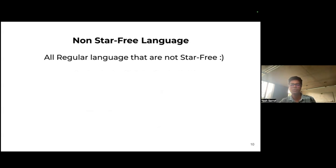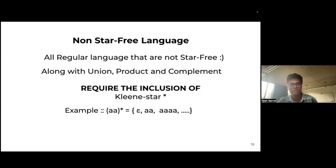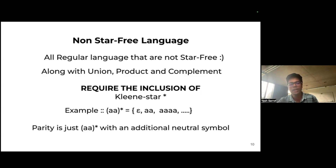There's another class: non-star-free languages — all regular languages that are not star-free — which require inclusion of Kleene star. An example is A*. Here we can't use the same trick; saying the string should not start with A or end with A breaks the language definition. A* is a simpler version of parity, which checks whether the number of a designated character is even, with an additional neutral symbol. If B is the neutral symbol, we don't care how many B's there are, but we do care whether the number of A's is even.